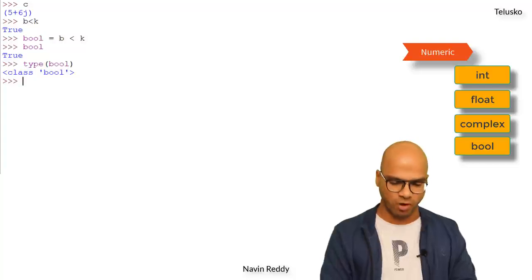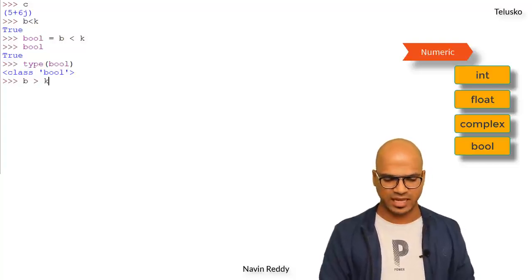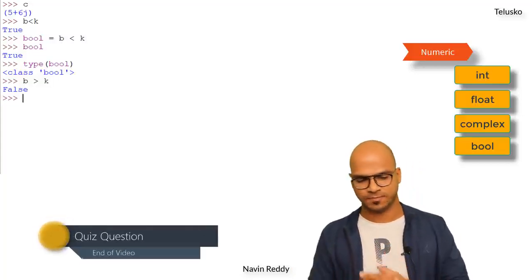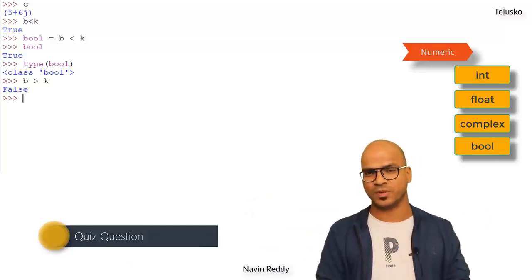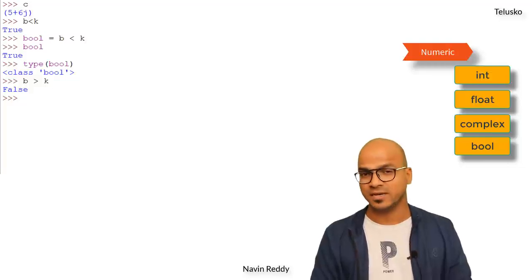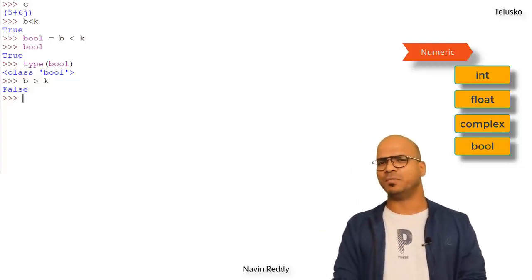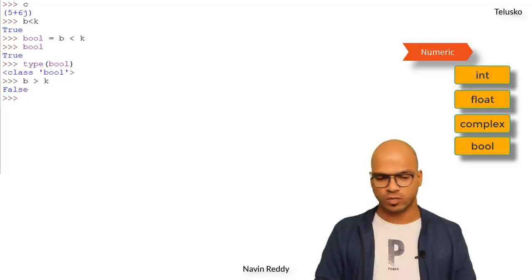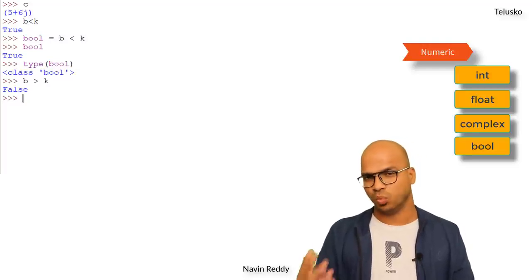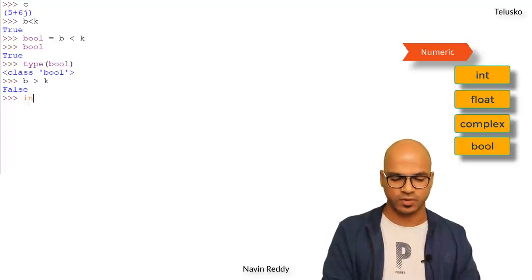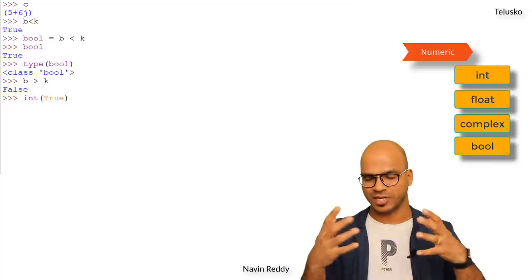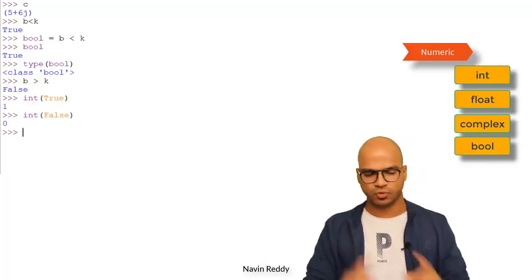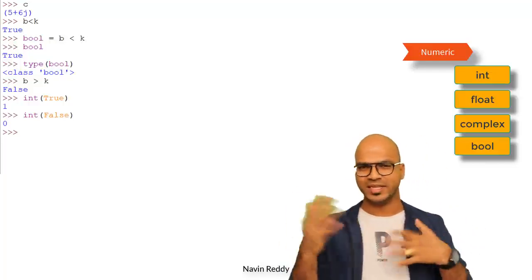We also have False — for example, b is greater than k returns False since b is 5 and k is 6. Now you might wonder why bool is under numeric. In Python, True is treated as 1 and False as 0. If I convert True to int format, I get 1; if I convert False, I get 0. So bool is part of the numeric type.